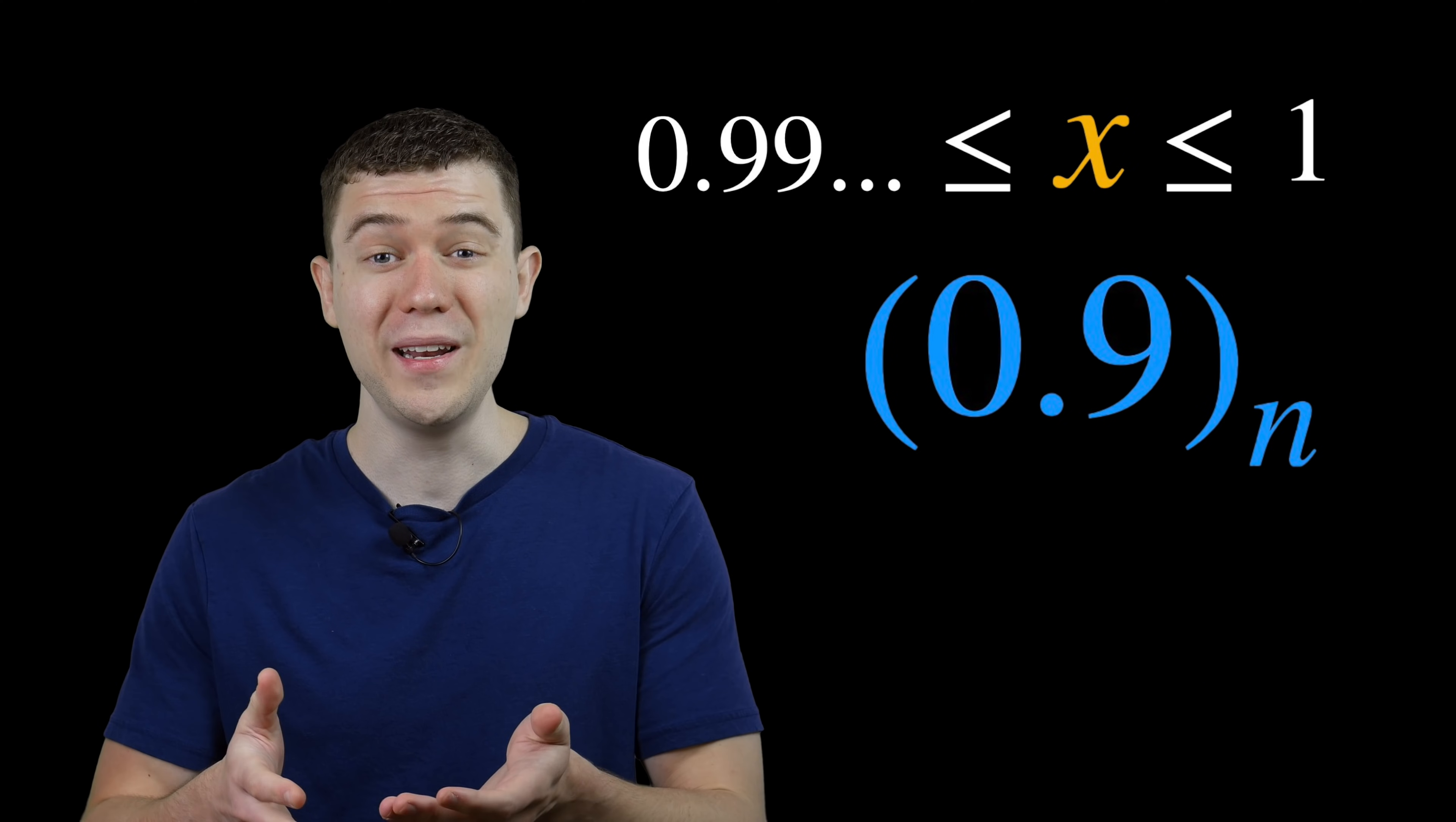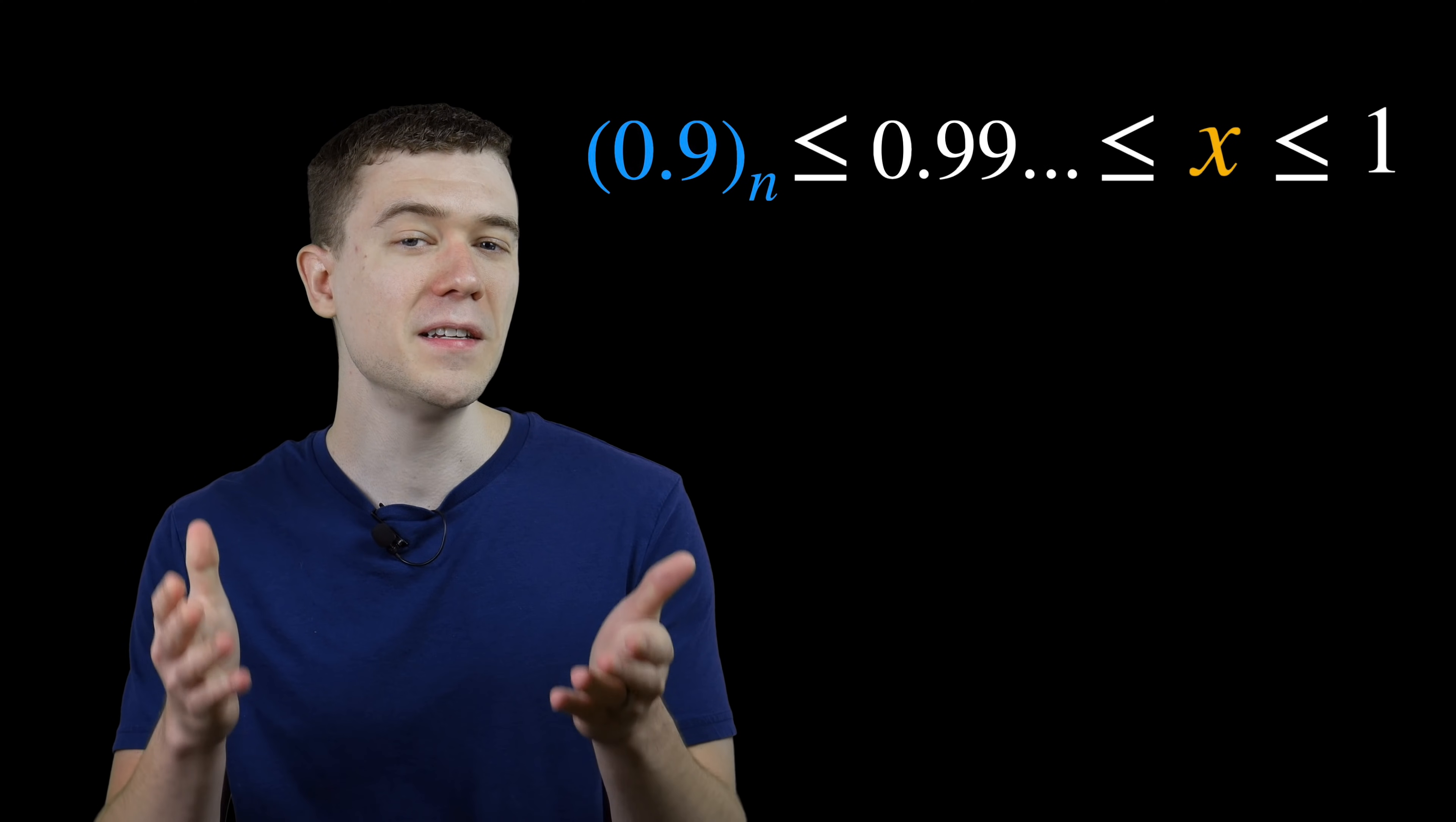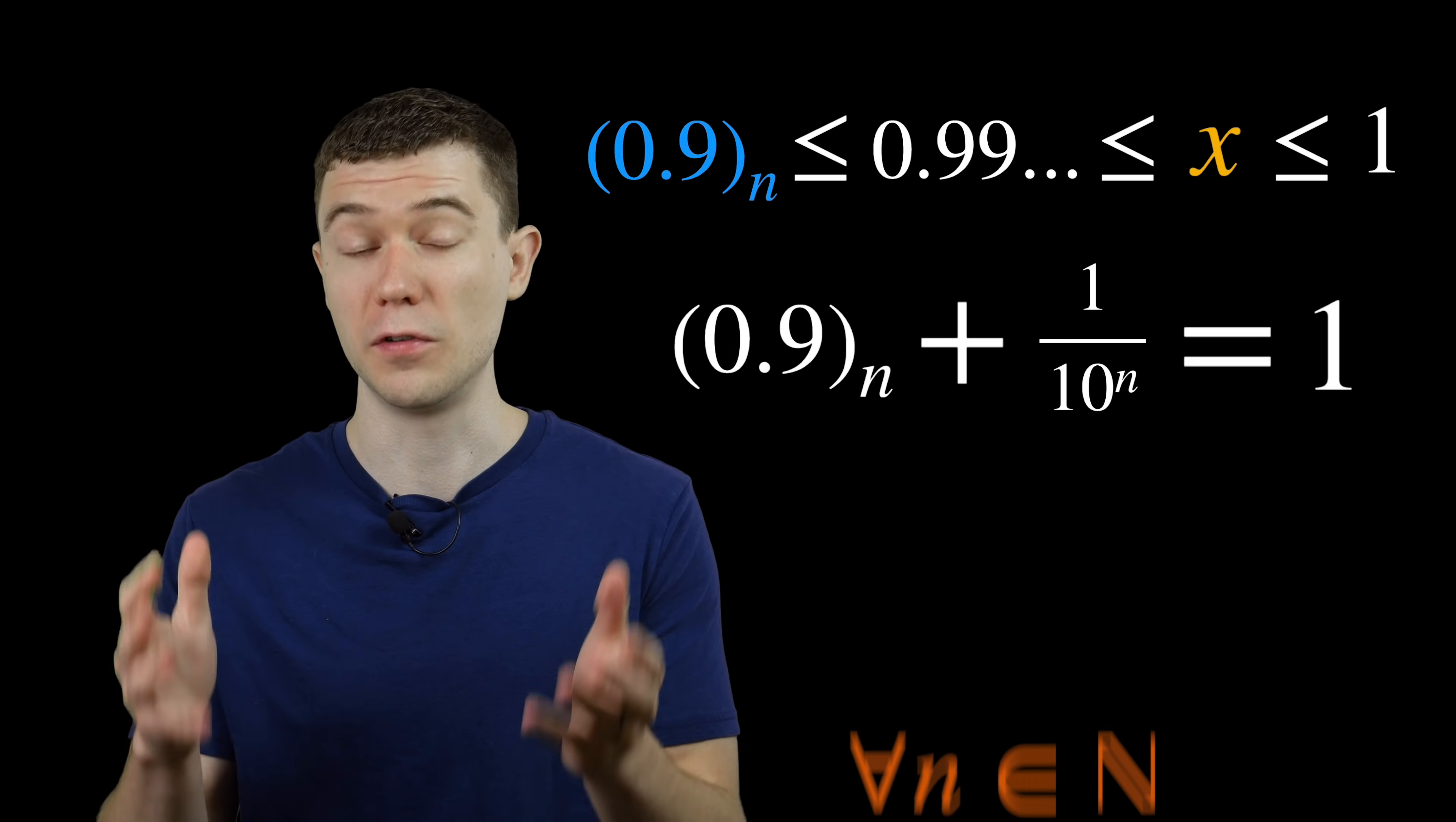Since 0.9 repeating has an infinite number of nines, we can fit this sequence into our inequality. Something to note about 0.9 sub n is that if we add 1 over 10 to the n to it, it equals 1 for all n.